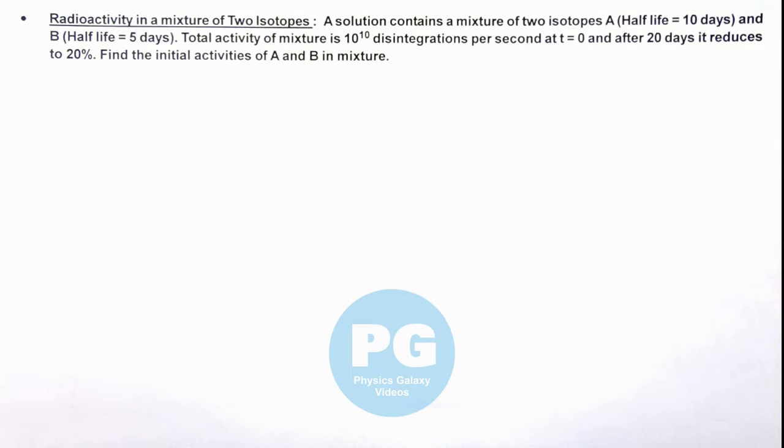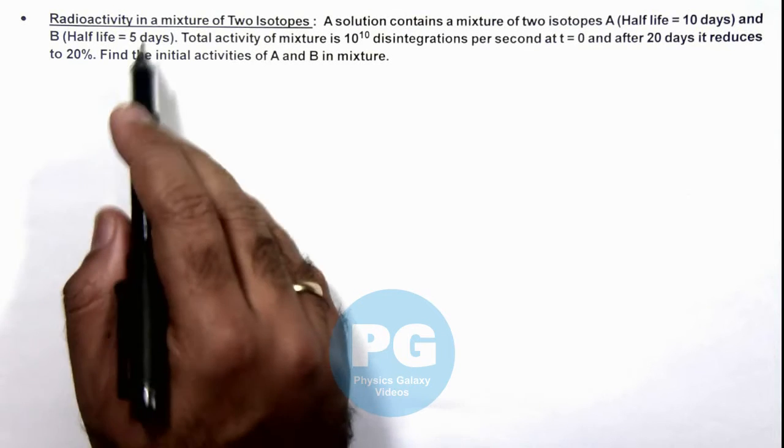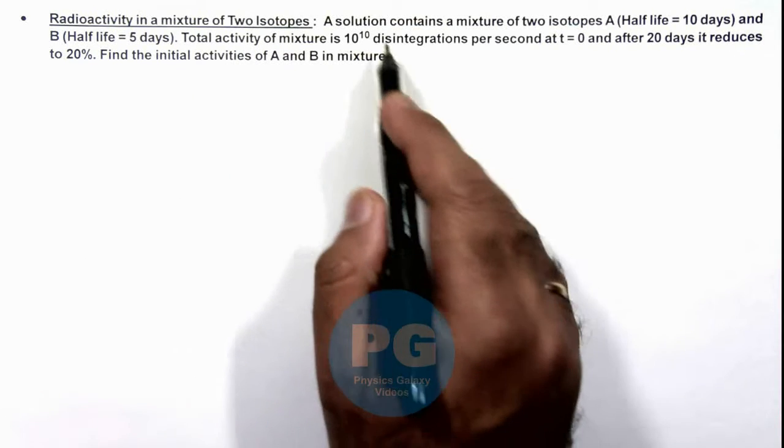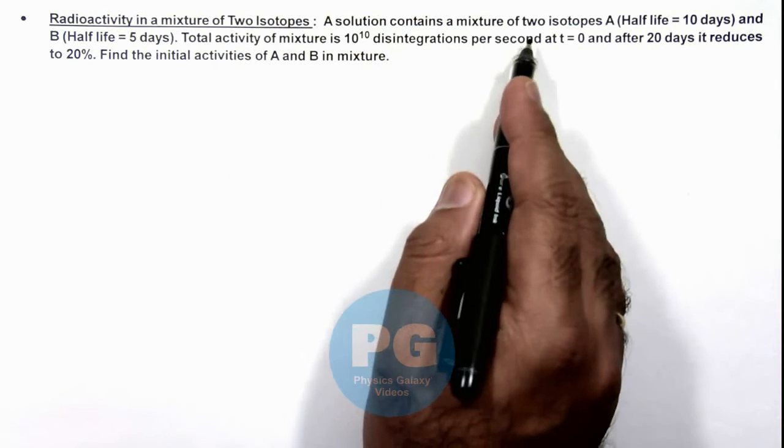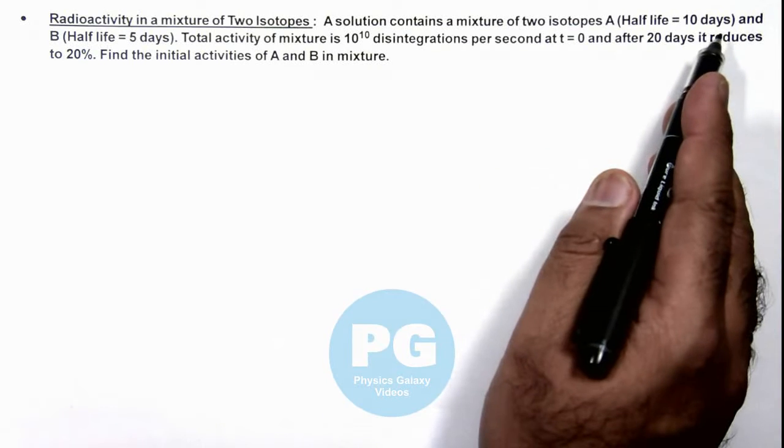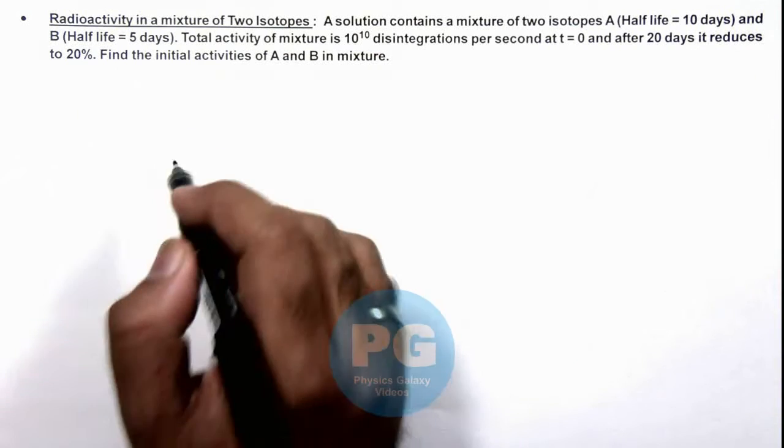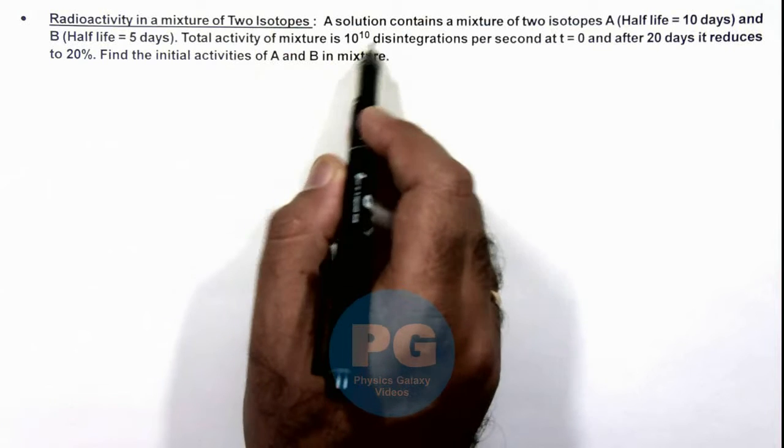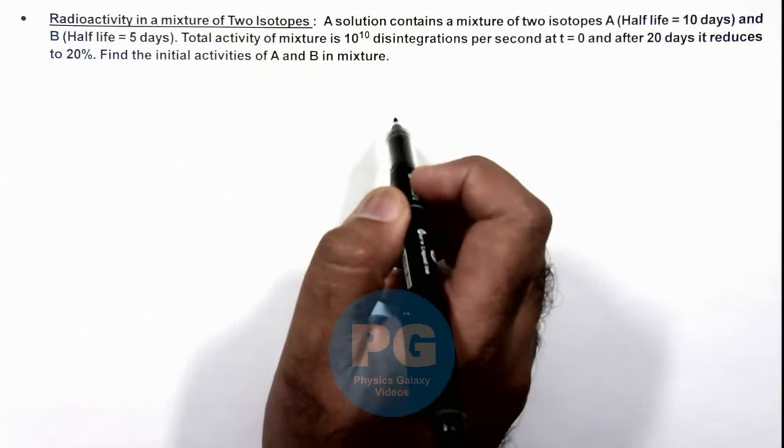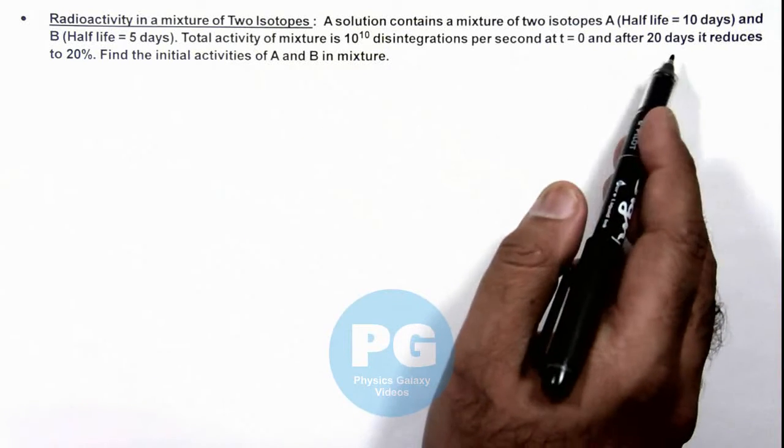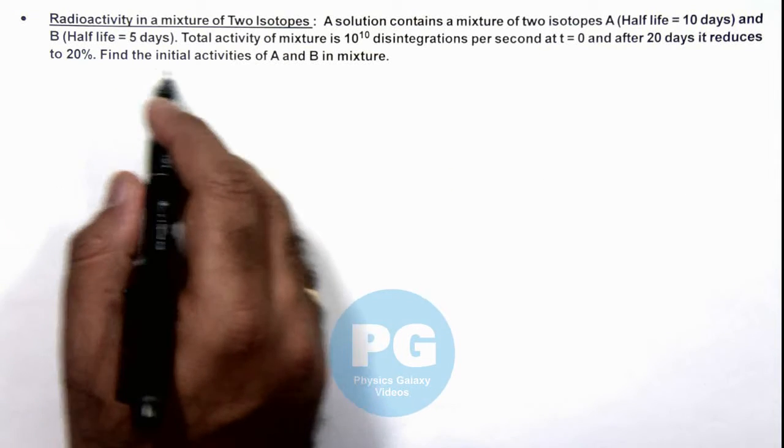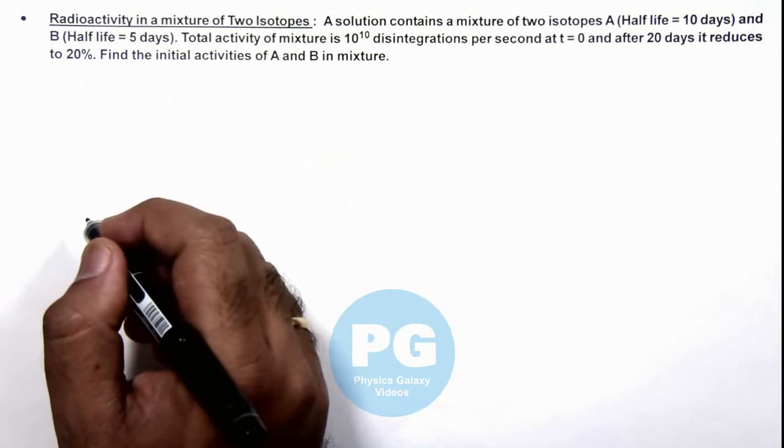In this illustration we'll discuss radioactivity in a mixture of two isotopes. We are given that a solution contains a mixture of two isotopes A having a half-life of 10 days and B with a half-life of 5 days. The total activity of the mixture is 10^10 disintegrations per second at t = 0, and after 20 days it reduces to 20%. We are required to find the initial activities of A and B in the mixture.